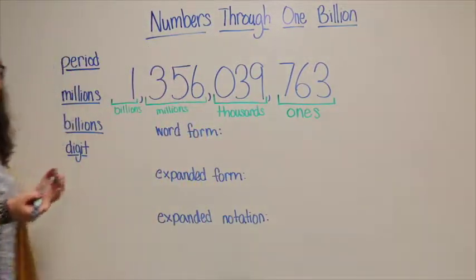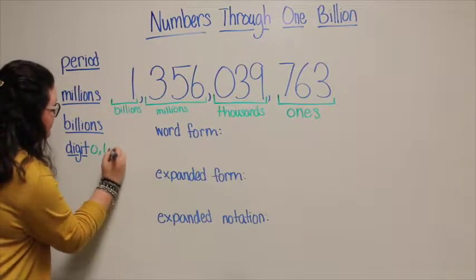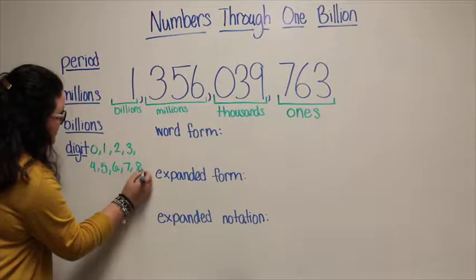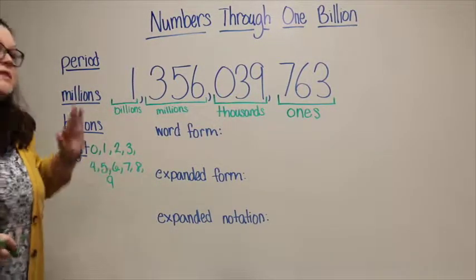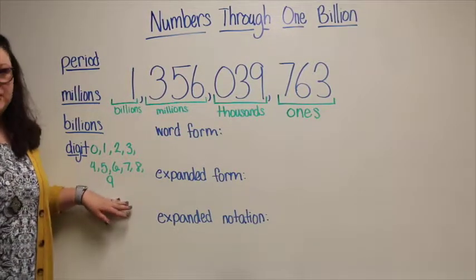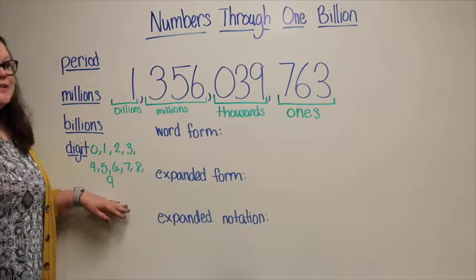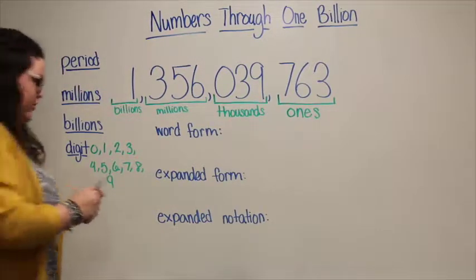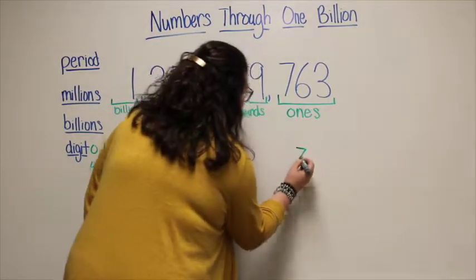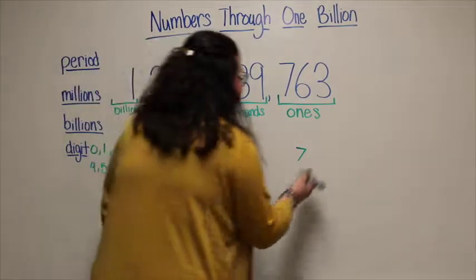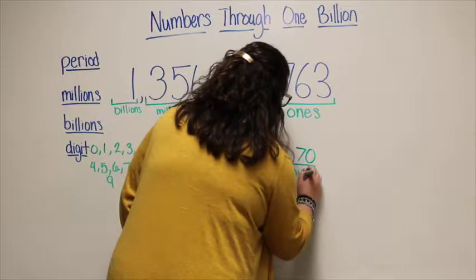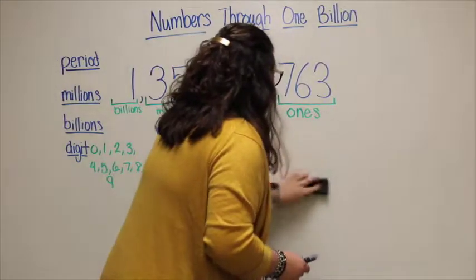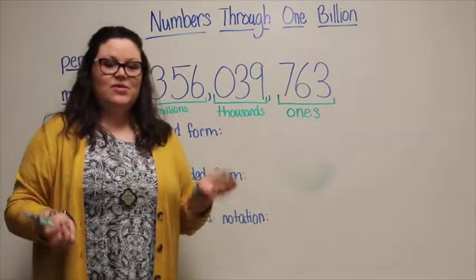A digit is a numeral. Here are examples of digits: zero, one, two, three, four, five, six, seven, eight, and nine. These digits don't have values yet because they're not in a place value — they're just a digit. How does a digit become a number? You put it in a place value. So if I put a digit on the board, that's a digit. But if I put it in a place value, now it is a number — it is the number 70. It's a digit until it's put in a place value, then it is a number.